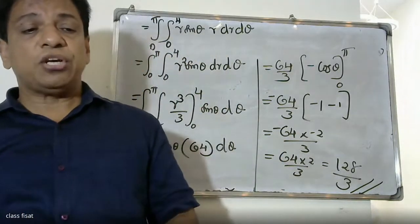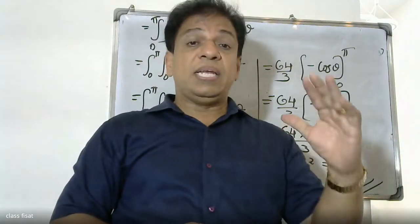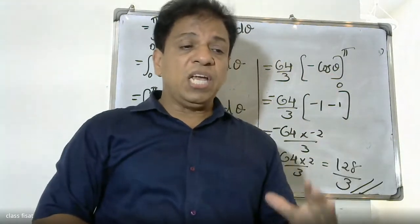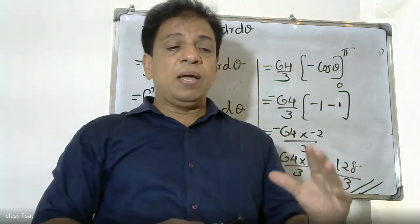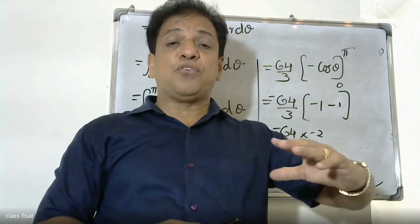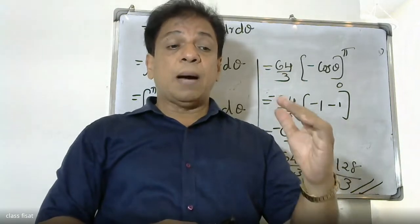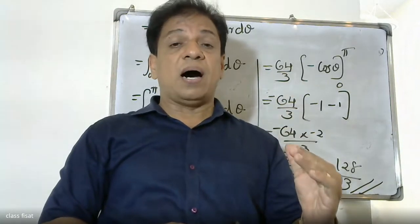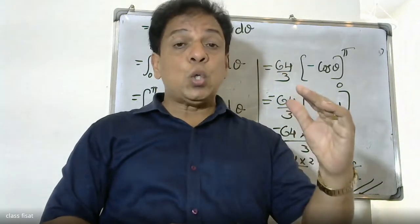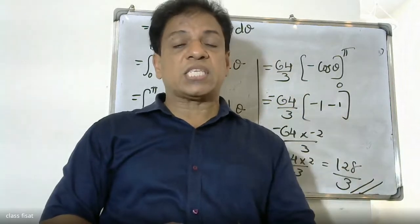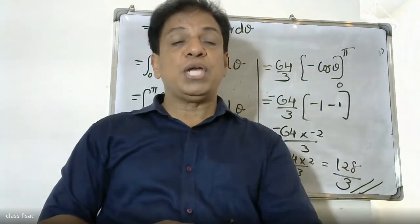To recap: Green's Theorem gives us ∮_C (f dx + g dy) = ∬_R (∂g/∂x − ∂f/∂y) dA. We identified f(x,y) = xy and g(x,y) = x²/2 + xy, then computed the partial derivatives and substituted into the double integral.